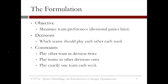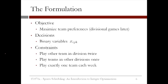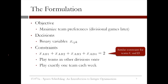Now let's go back to our formulation. Our decisions are which teams should play each other each week, modeled with binary decision variables XIJK, which equal 1 if team I plays team J in week K. The first constraint is that each team should play the other team in their division twice. So teams A and B should play each other twice in the four weeks. This is modeled with the constraint: XAB1 + XAB2 + XAB3 + XAB4 = 2. This forces two of these variables to equal 1 and the other two to equal 0, corresponding to the weeks A and B play each other. We'll have a similar constraint for teams C and D.